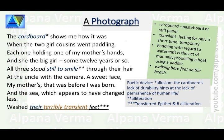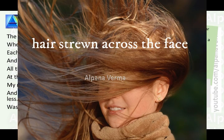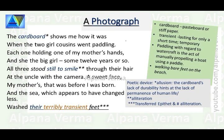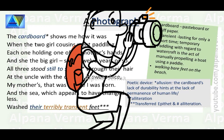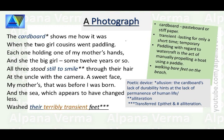All three — the poet's mother and her two cousins — stood still to smile through their hair at the uncle with a camera. They smiled because they were posing for a photograph, with their hair strewn across their faces, perhaps because of the wind at the beach. Poetic device here: alliteration — 'stood still to smile,' where the 'S' sound is repeated.